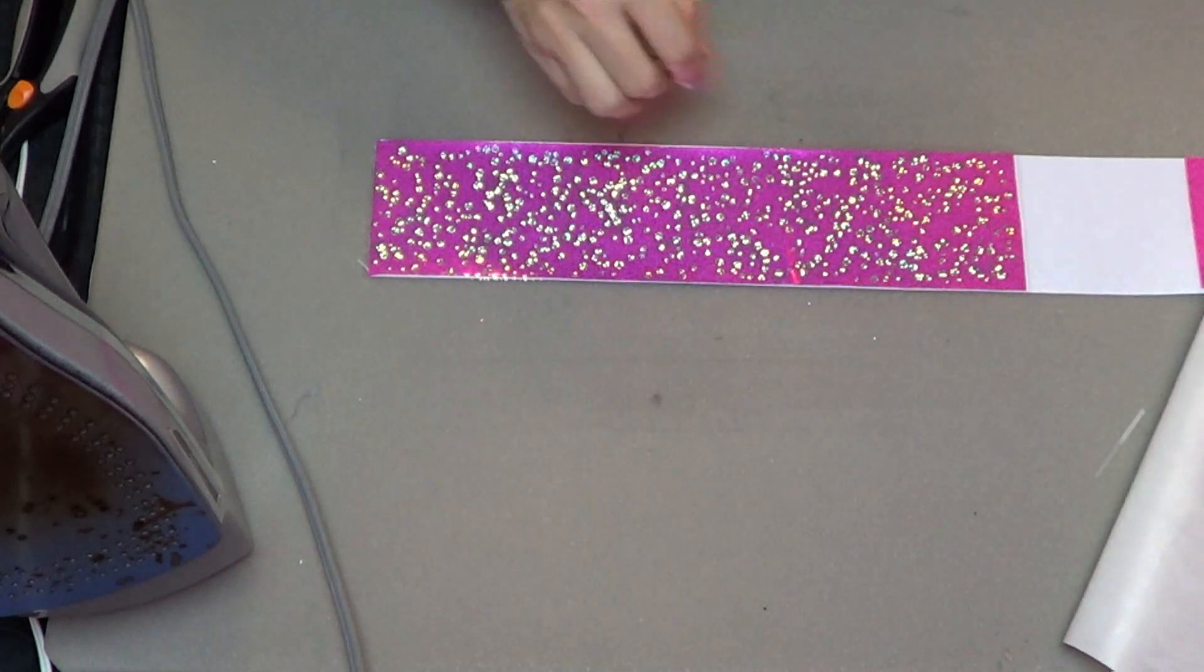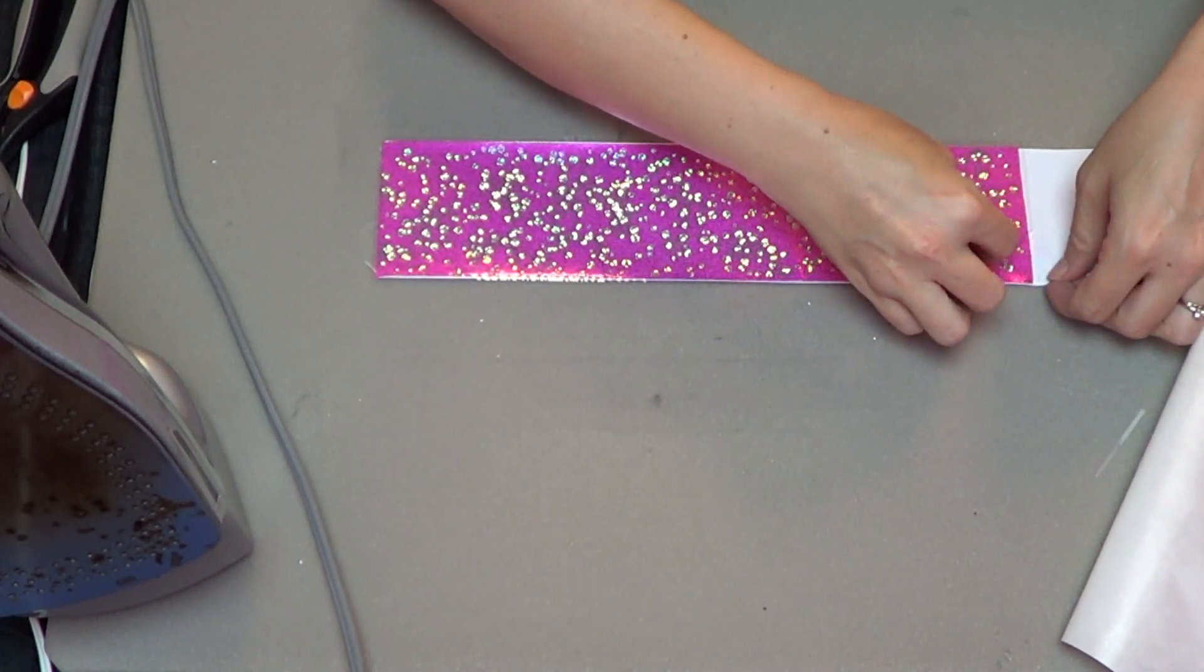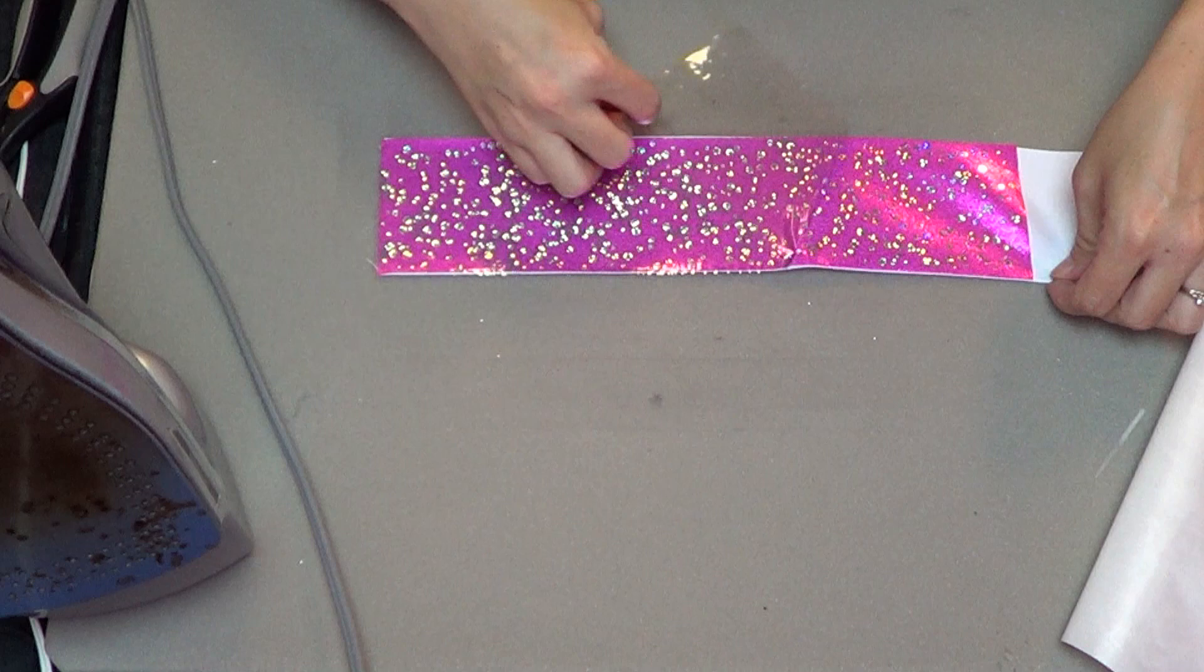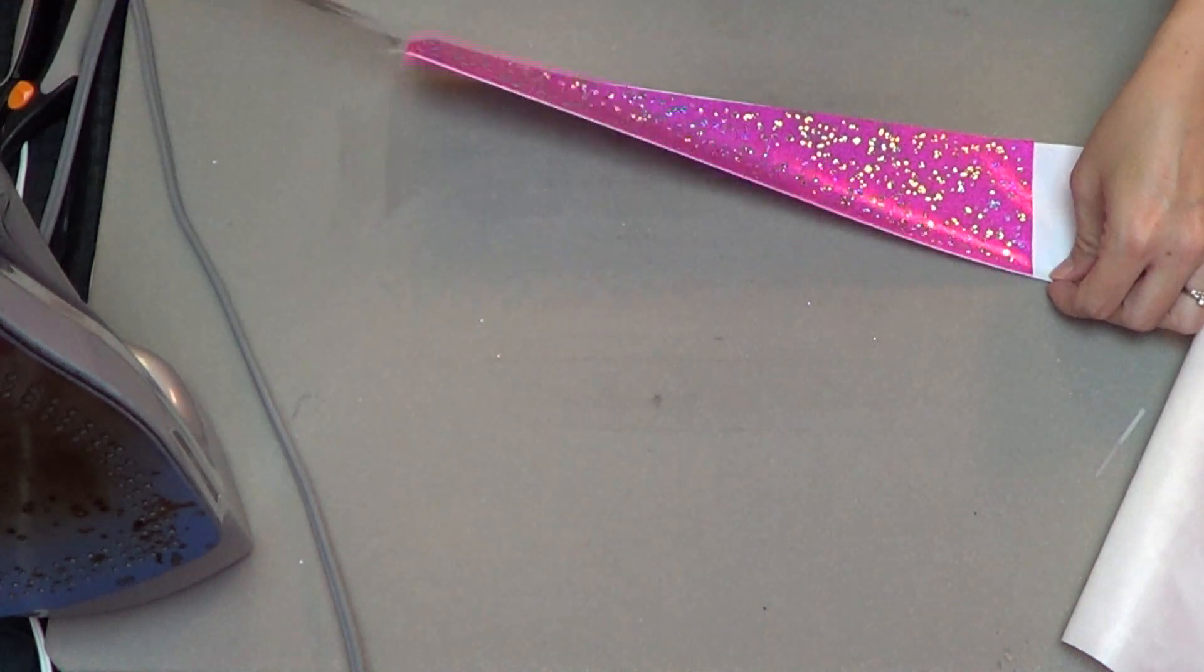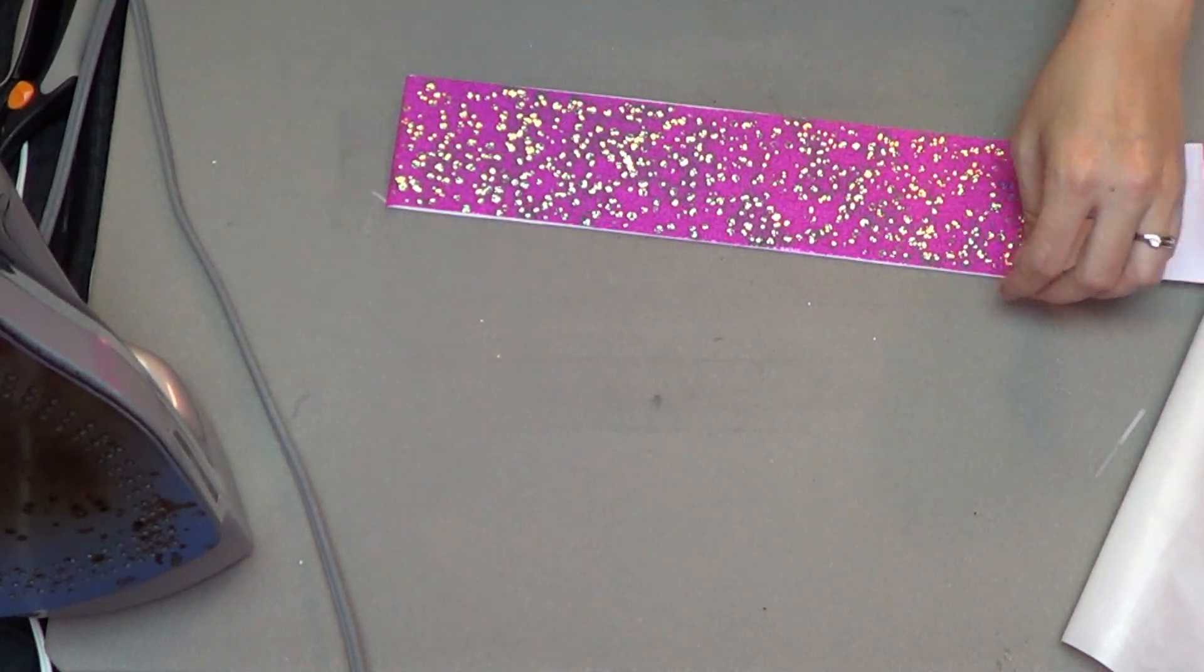Once you have it ironed on, it is a warm or hot peel product, so when you peel away the carrier sheet, all of those spangles will stay stuck to your spandex.